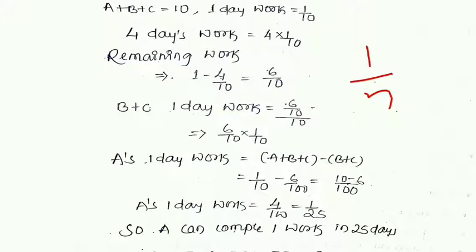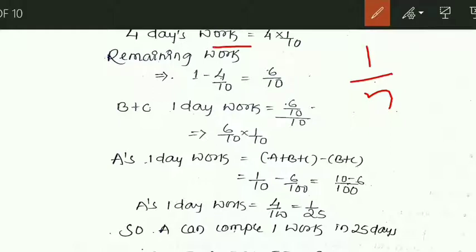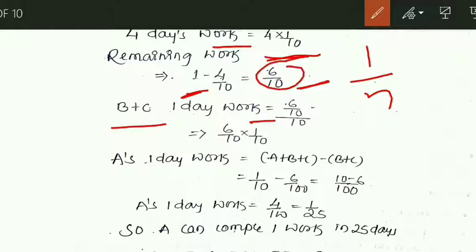In the first 4 days, the work completed is 4 × (1/10) = 4/10. So the remaining work is 1 − 4/10 = 6/10. This is the work completed in the first 4 days, and 6/10 is the remaining work.